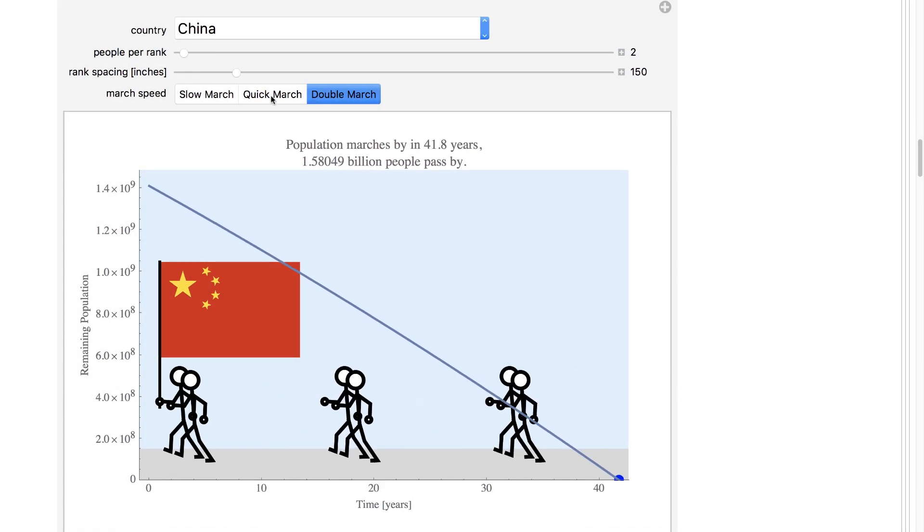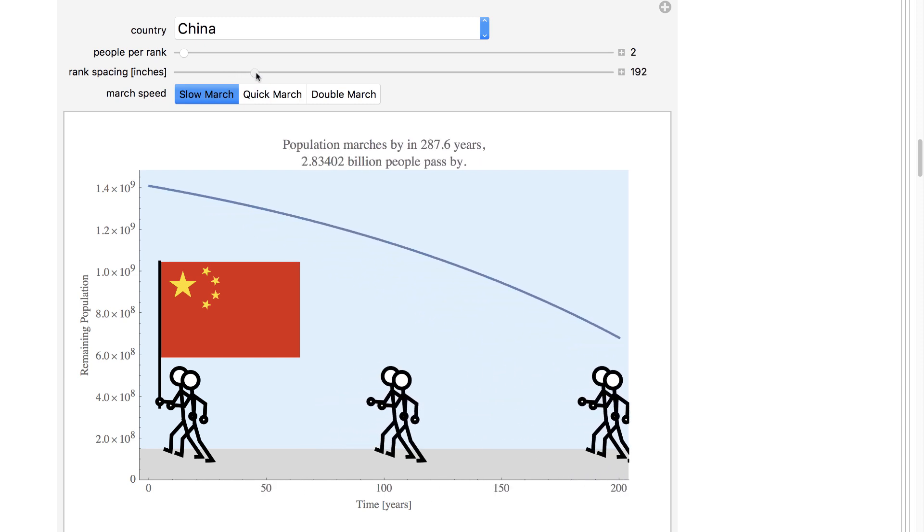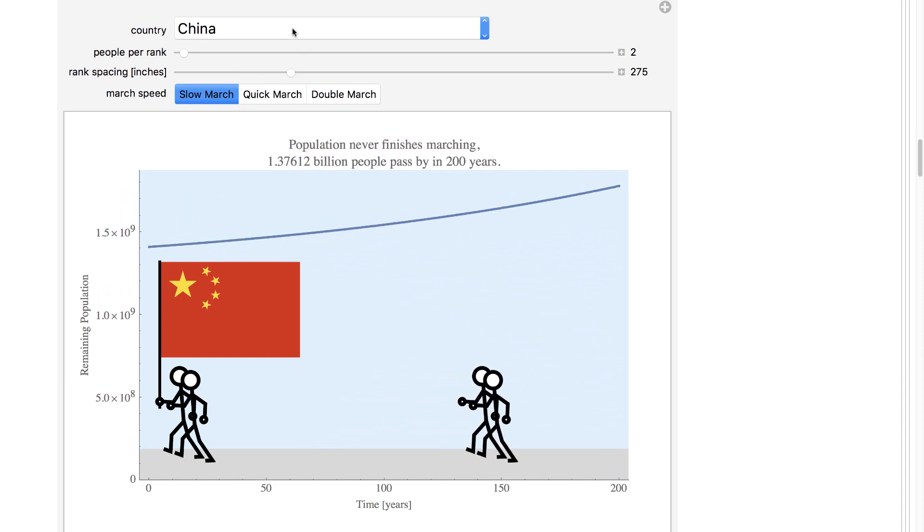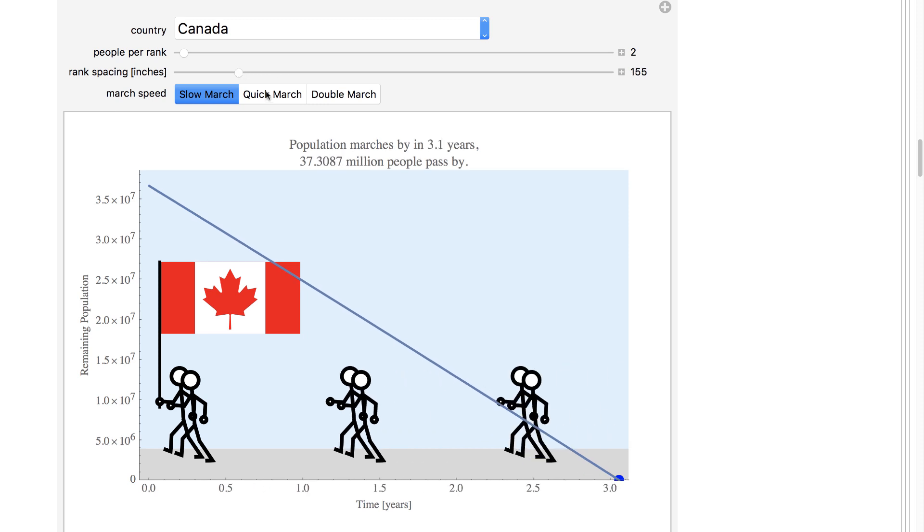To make China's parade last forever, you need to march slowly, limit the number of people per rank, and spread out the marchers. You can make a Canadian parade last a year.